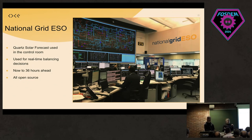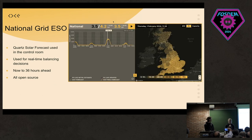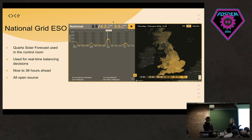Our solar forecasts are actually decreasing carbon emissions currently through our work with National Grid. Our main solar forecast is a national forecast run for National Grid ESO, the electricity system operator in the UK. Our national forecast is in operation in the National Grid control room. The dotted line is your forecast and the solid line is the history. National Grid makes balancing decisions based on this information — if they see 3.5 gigawatts of energy guaranteed on the grid, they can reduce spinning reserves and decrease balancing costs, diminishing carbon emissions at the same time.